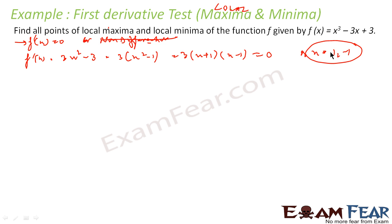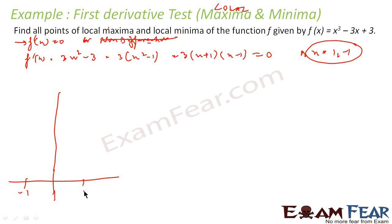So either of these could be a maximum or minimum — we don't know yet. To find whether each is a maximum or minimum, let's set up a number line with -1 and 1 marked. At x = 1, I know my slope is 0, so the curve has a flat tangent at that point.